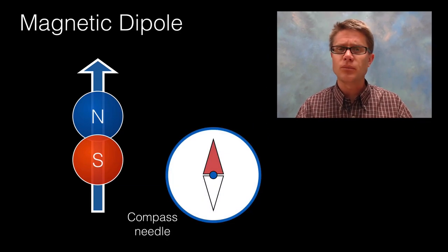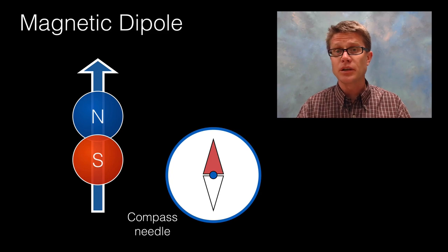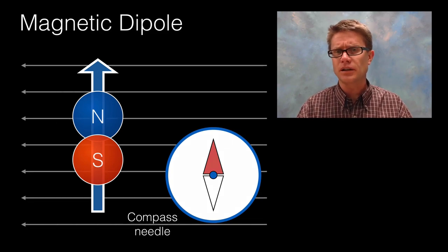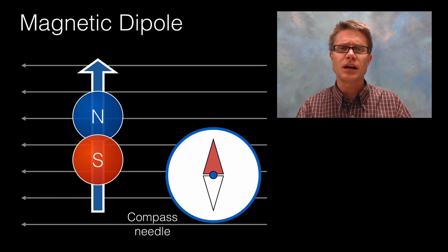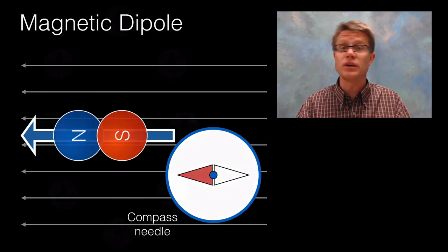And so an example of a magnetic dipole could be a compass needle. And so let's say we have a compass needle and then we apply a magnetic field coming from right to left. How is that magnetic dipole going to respond to that? Well it's going to experience a torque and it's going to move in that direction.